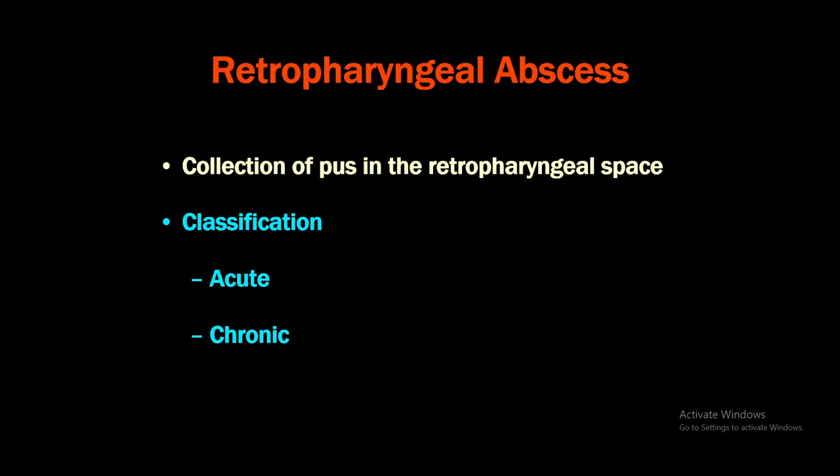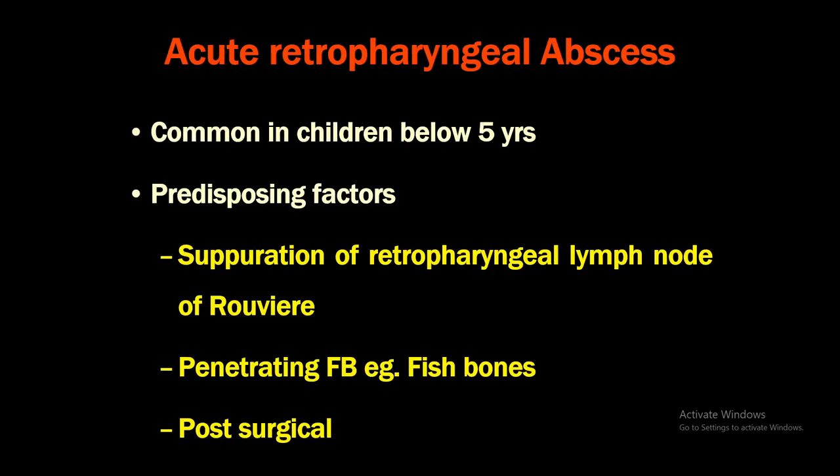Moving to the second topic: retropharyngeal abscess, defined as a collection of pus in the retropharyngeal space. It is classified into acute and chronic types. Acute retropharyngeal abscess is common in children below five years of age. The most important predisposing factor is suppuration of the retropharyngeal lymph nodes of Rouvière — these lymph nodes are present in children but absent in adults, which is why this condition is common in childhood.